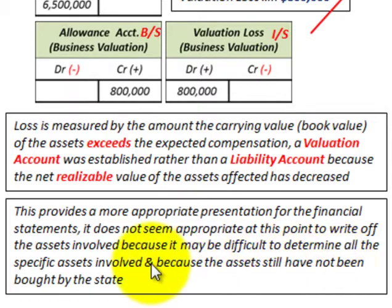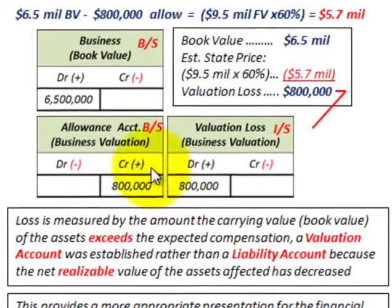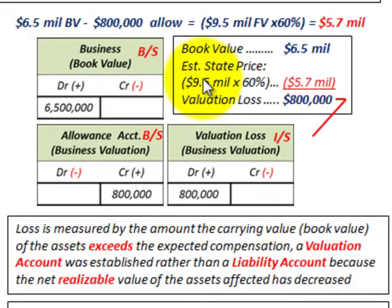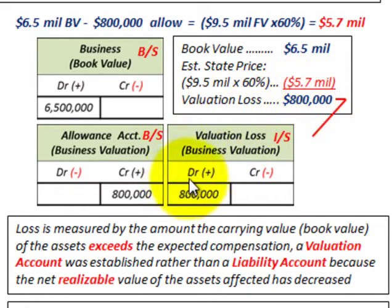The assets still have not been bought by the state, so that reviews how you can use loss contingencies where you don't always set up a liability account — you can set up an allowance account when dealing with a business you're going to receive less for than its fair value, provided you can determine with reasonable certainty what you'll actually receive. In this case, the book value was greater than the reasonable estimate of what the state was going to pay, so we set up this valuation loss on our balance sheet date, even though the business hasn't been purchased yet, because it's highly probable the state will go through with the highway and buy out Corporation A.